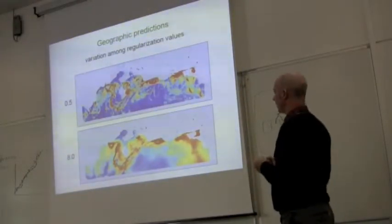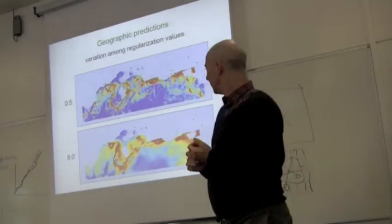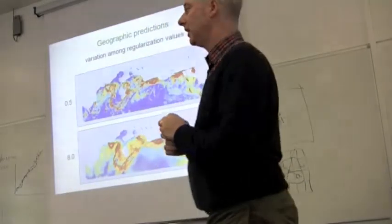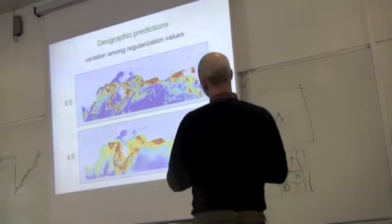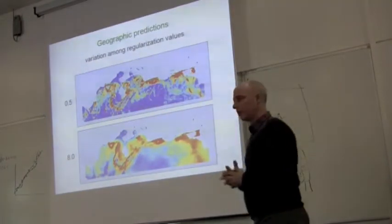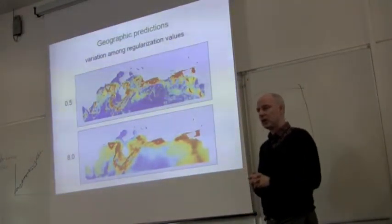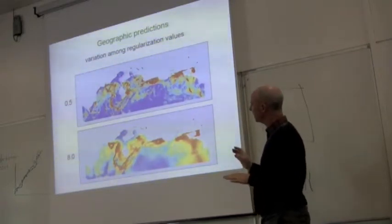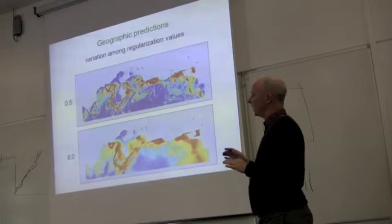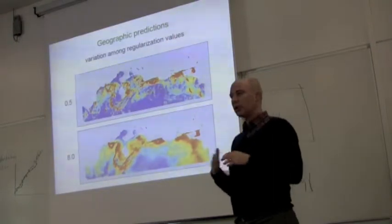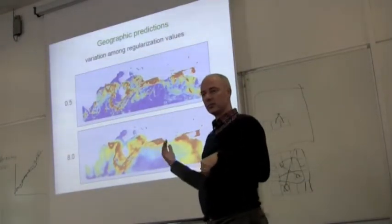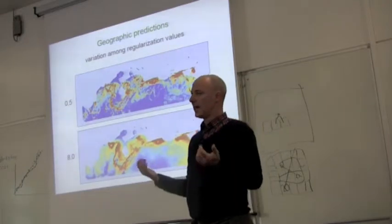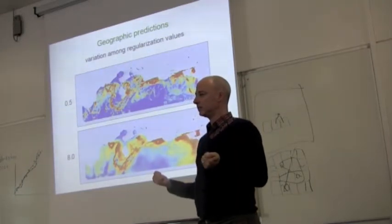Okay, so geographic predictions. This is a couple of examples of regularization multiplier. If I don't convince anybody of anything else, answer me this: Does changing regularization drastically like this affect the output of the model in geography? Yes.